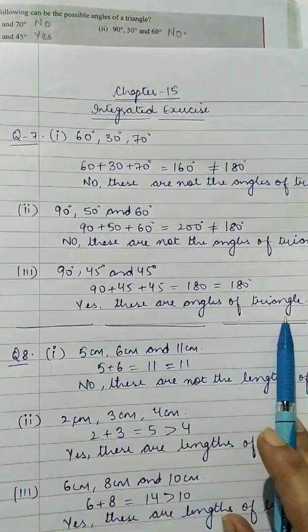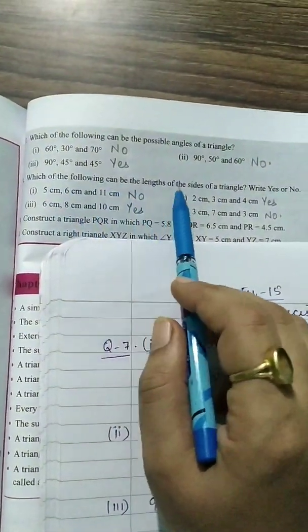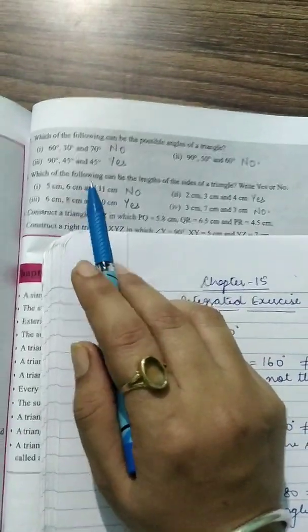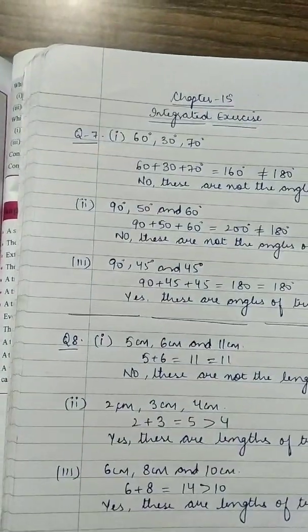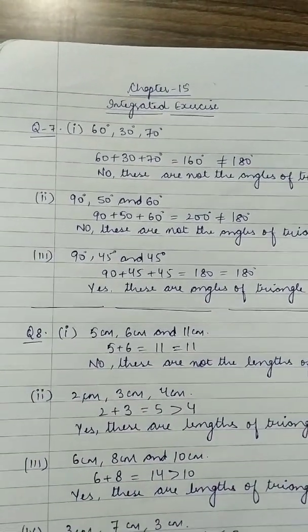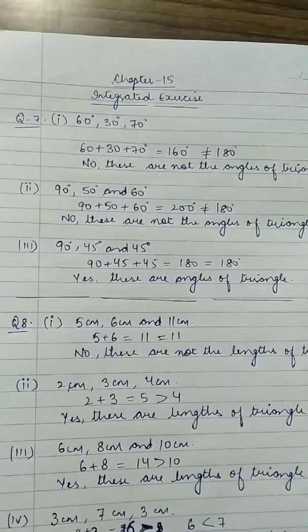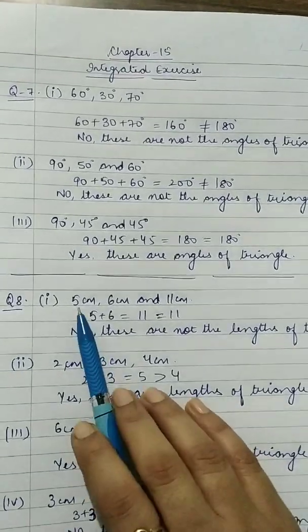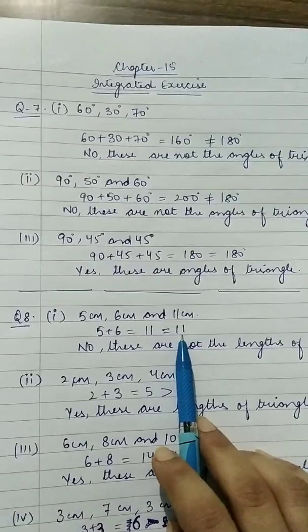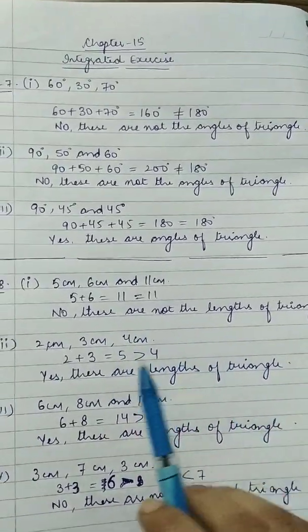Question number 8: which of the following can be the lengths of the sides of a triangle? The property to apply is that the sum of any two sides must always be greater than the third side. First part — sides 5, 5, and 6: 5 plus 5 equals 11, but 11 is not greater than 6... wait — 5 plus 6 equals 11, and 11 equals 11, but it must be strictly greater. So no, these are not valid lengths.